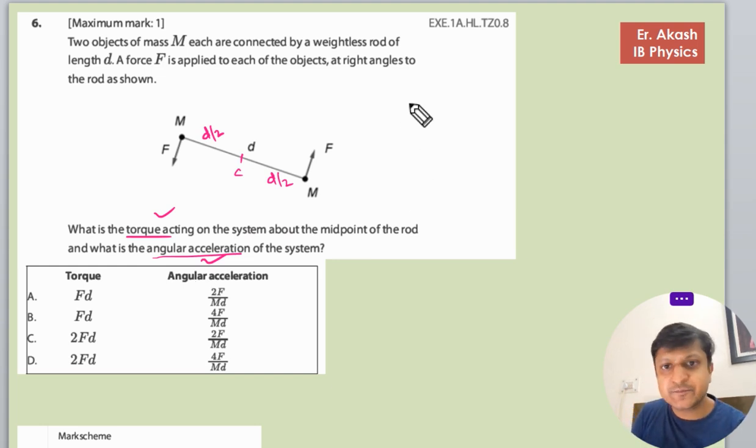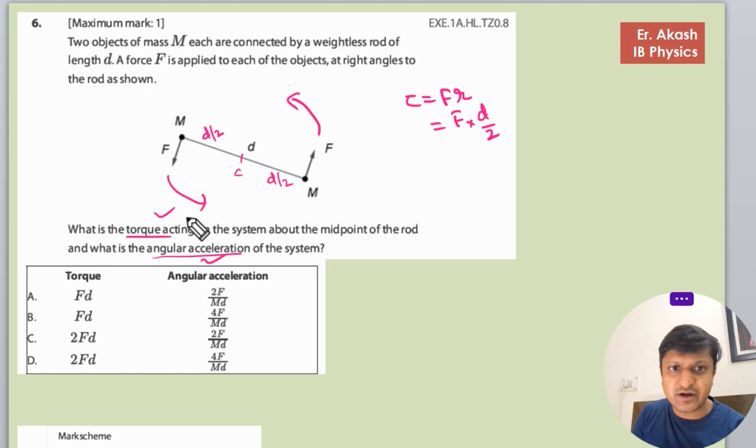Let's see. In this question, you know that torque is force into radius, so radius is d by 2. So force into d by 2, and we will also add because this is anti-clockwise, this is also anti-clockwise, both will add up. So F into d by 2, so it will become Fd. So torque is Fd.